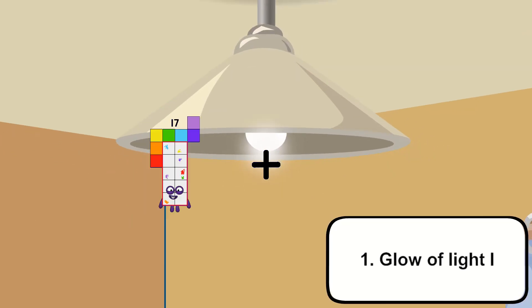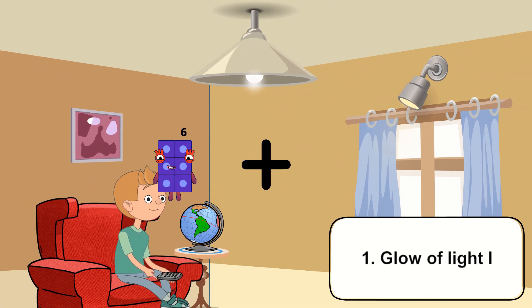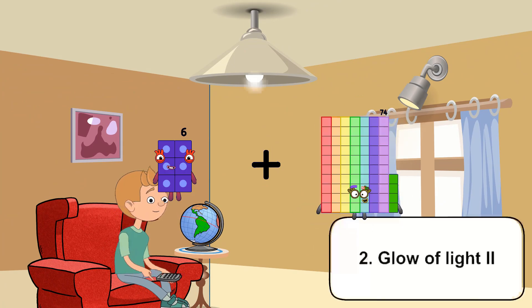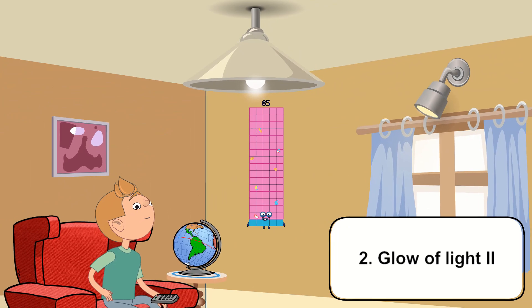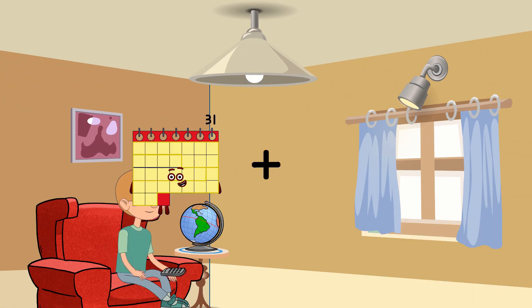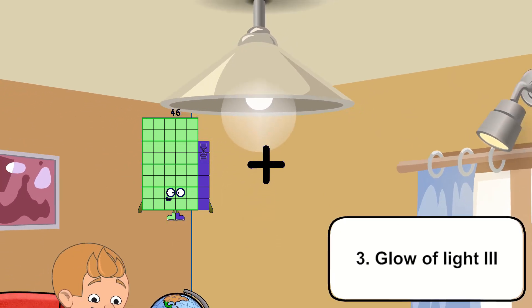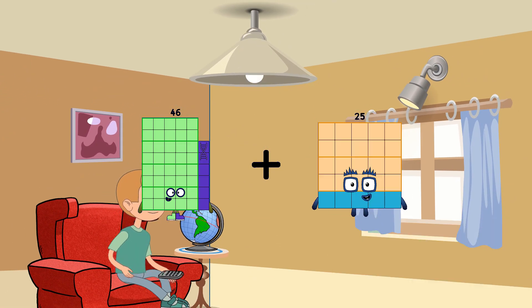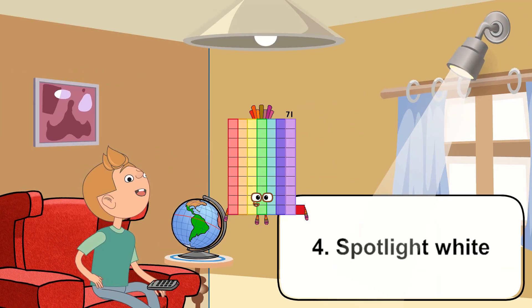Six plus seventy-nine equals eighty-five. Forty-six plus twenty-five equals seventy-one.